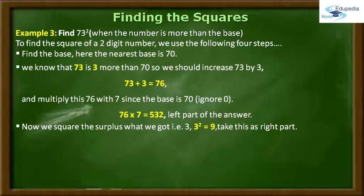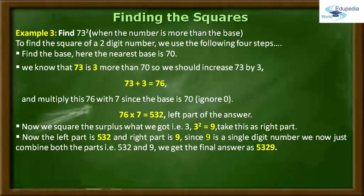Moving further to step number 4, the left part what we have got is 532 and the right part is 9. Since 9 is a single digit number and the number of zeros in the base is also only 1, by combining both the parts — that is 532 and 9 — I am going to get the final answer as 5329. Therefore, we can say that 73 square is equal to 5329.